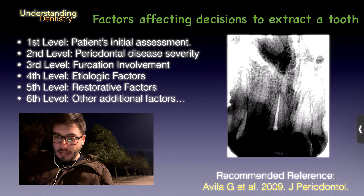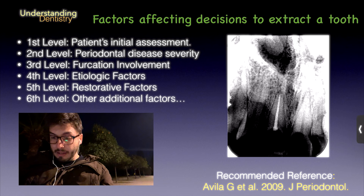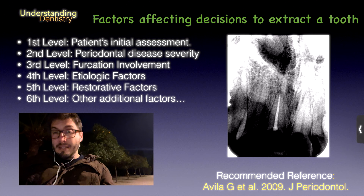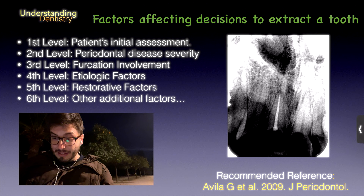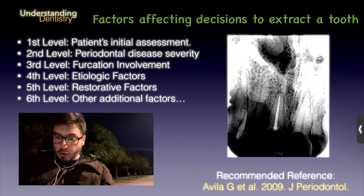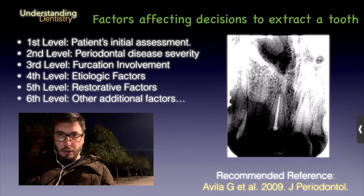The third level is furcation involvement. Class three of the Hamp classification — where you can trespass with the probe horizontally through the furcation from buccal to lingual because of the full bone defect — is a red color, indicating the worst prognosis. The interproximal bone level relative to the furcation entrance also matters; if it is below that level, it is red. Root anomalies are classified as yellow. Financial concerns are also noted at this level.